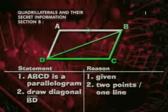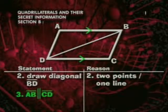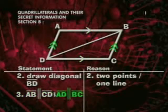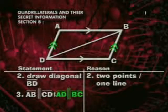Now we have two triangles, ABD and CDB. Next, we'll say that AB is parallel to CD, and AD is parallel to BC. Why?